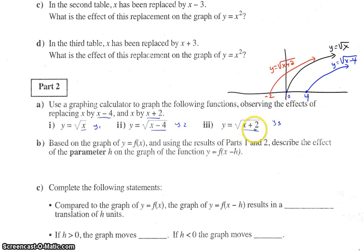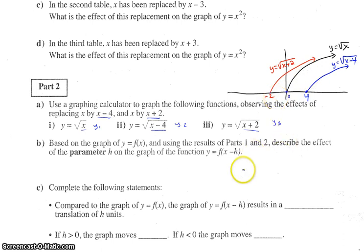y equals the square root of x plus two — the red graph — this key point is now at negative two instead of zero, zero. It seems to have moved left two.